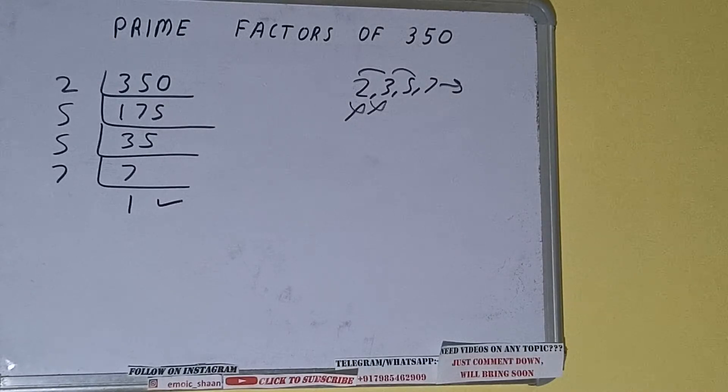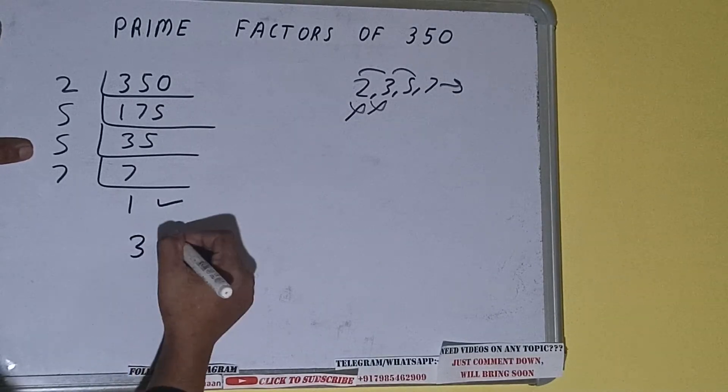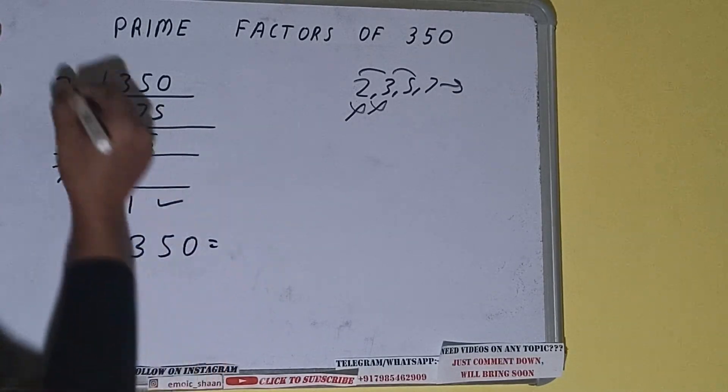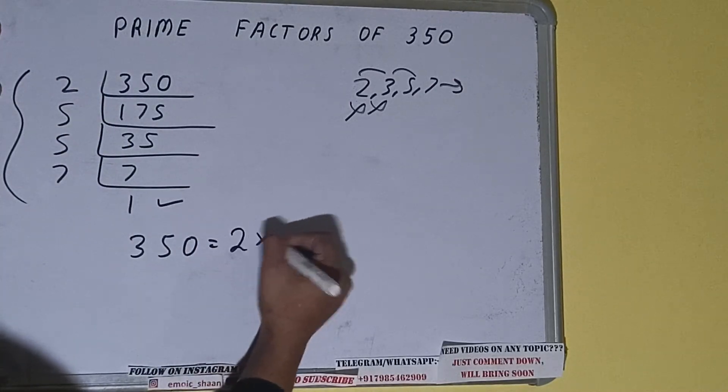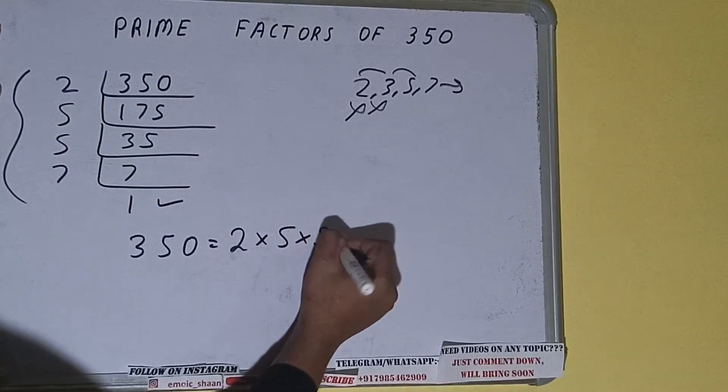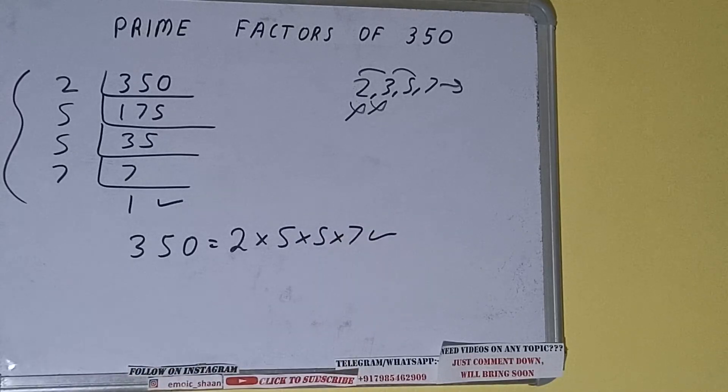Once we get 1 we need to stop and do one last thing that is prime factors of 350 will be whatever we have on the left hand side that is 2 × 5 × 5 × 7. That will be the answer.